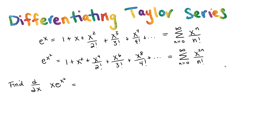We talked about creating a new series using substitution. The Taylor series for e to the x squared can be found using the Taylor series for e to the x — wherever we see an x, we just write in x squared. Substituting x squared in each place, we get 1 plus x squared plus x to the 4 over 2 factorial plus x to the 6 over 3 factorial plus x to the 8 over 4 factorial and so on.